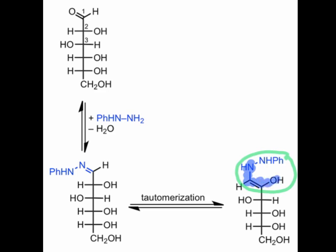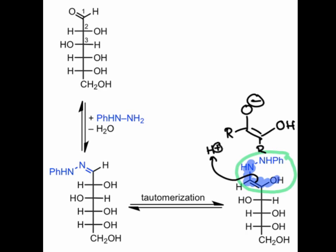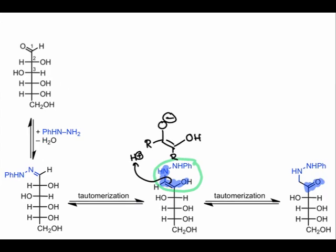We can draw an analogy between this intermediate and the enediolate observed under base-promoted isomerization conditions. Like the enediolate, this intermediate is basic and nucleophilic at both carbon atoms, and protonation at the carbon alpha to the alcohol group — that is, the former hydrazone carbon — gives a ketone. You may notice that the mechanism up to this point is analogous to the base-mediated isomerization we saw earlier. In fact, the only difference is that a hydrazone has replaced the starting aldehyde group.